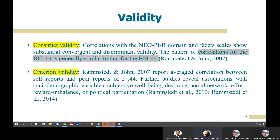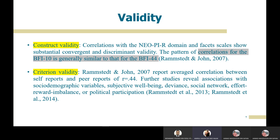Referring to validity, there are two types of validity found in this inventory: construct validity and criterion validity. For construct validity, the pattern of correlation for BFI-10 and BFI-44 shows generally similar results, meaning both inventories measure the correct constructs — the five Big Five traits.